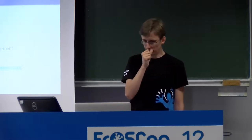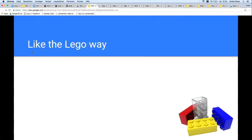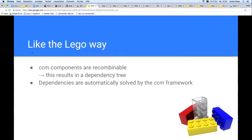The CCM framework is published as free software under the MIT license — there you have the GitHub link. It is loaded automatically when a component is used. This is why you don't see the CCM framework in the HTML examples — you only use the components and the framework will be loaded in the background. Like the legal way, CCM components are recombinable, which results in a dependency tree. These dependencies are automatically solved recursively and asynchronously by the CCM framework.